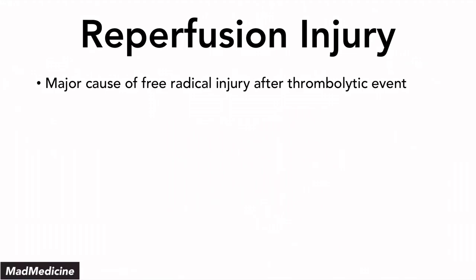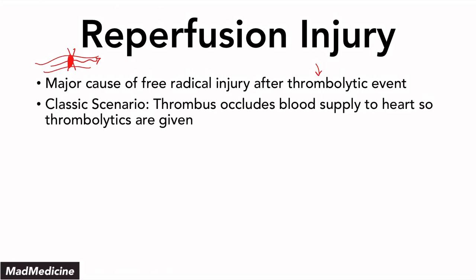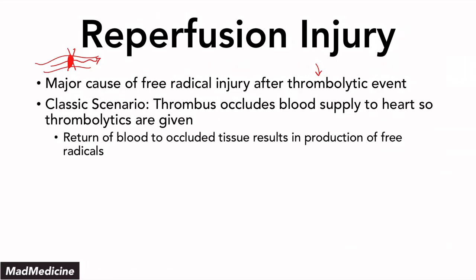Another way free radical injury can occur is through reperfusion injury — one of the major causes of free radical injury after a thrombolytic event. So let's say you have a thrombus that forms in a blood vessel and you're able to destroy that thrombus and reperfuse blood flow. One of the things that can happen is that free radicals form. A classic location is the heart — if you block off blood supply to the heart, lyse the thrombus, and treat the patient, you're going to end up seeing the patient get worse. The return of blood to the damaged tissue actually produces more free radicals, causing further damage — that's called reperfusion injury.